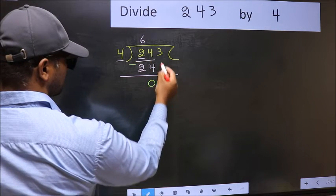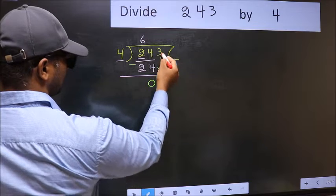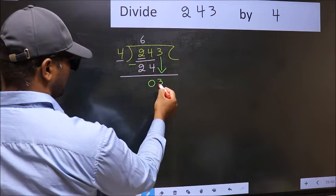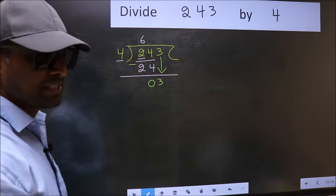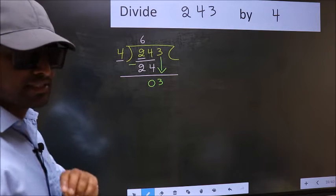After this, bring down the next number. So, 3 down. After this step, the mistake happens.